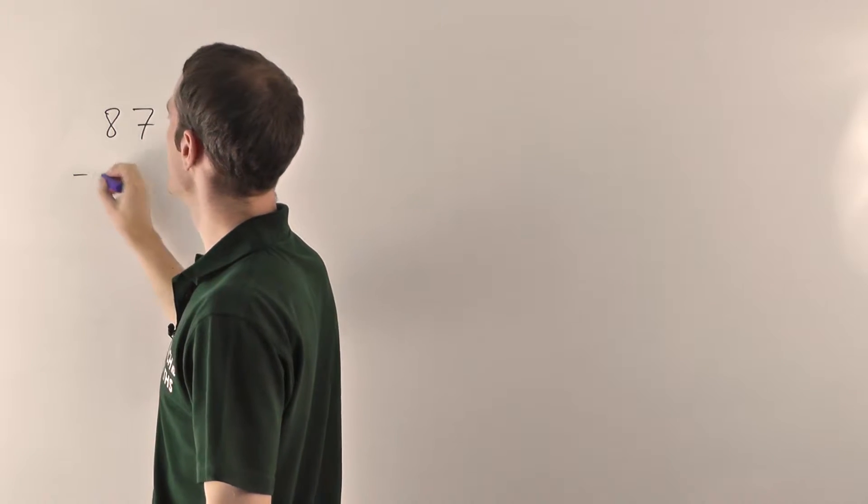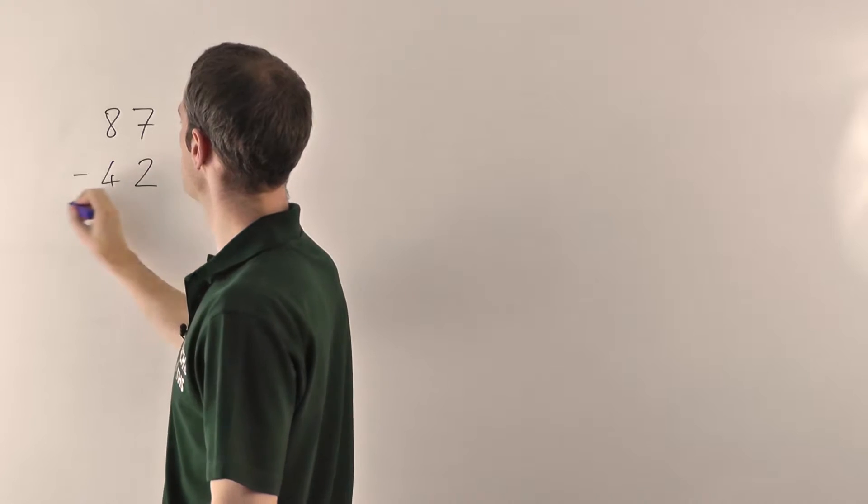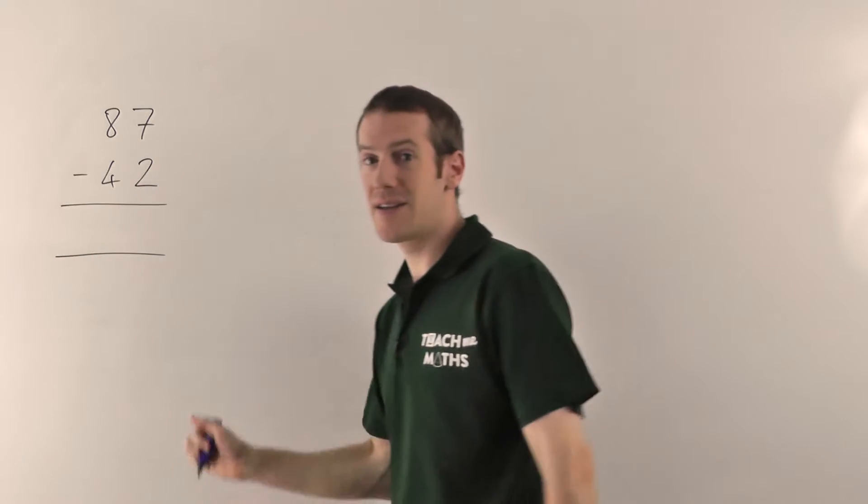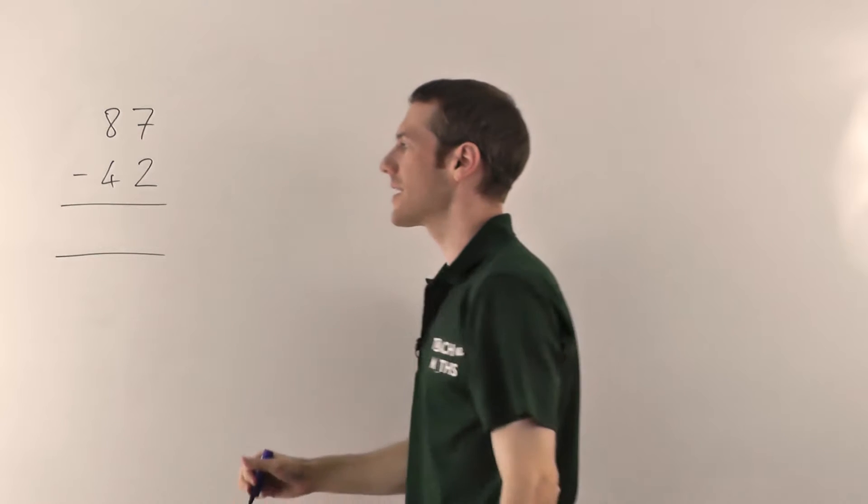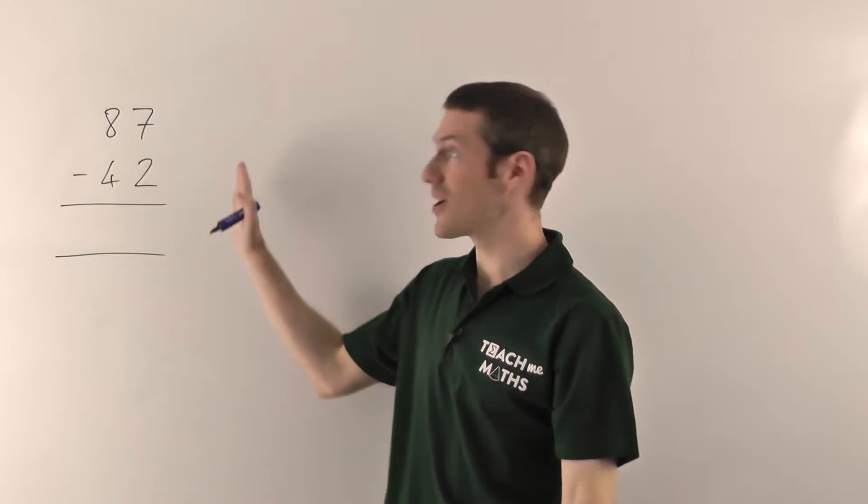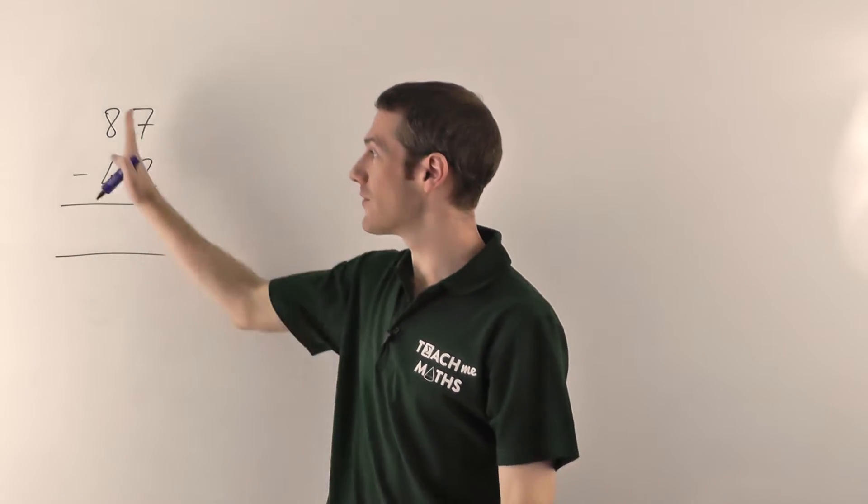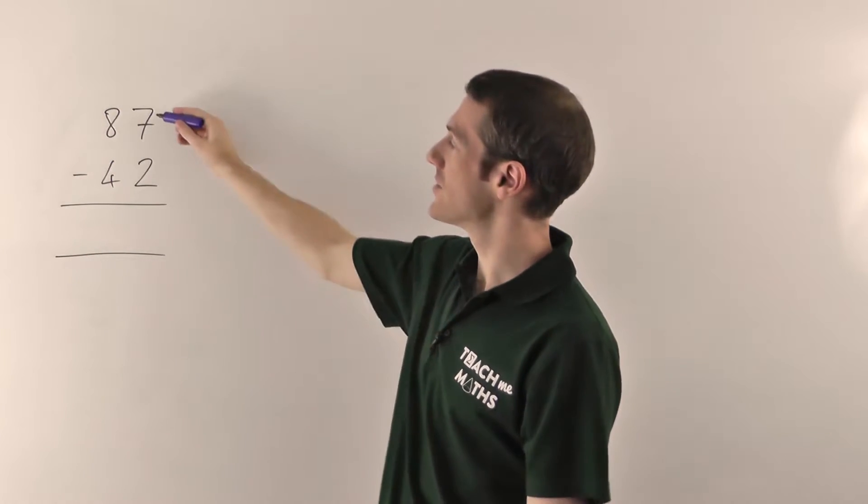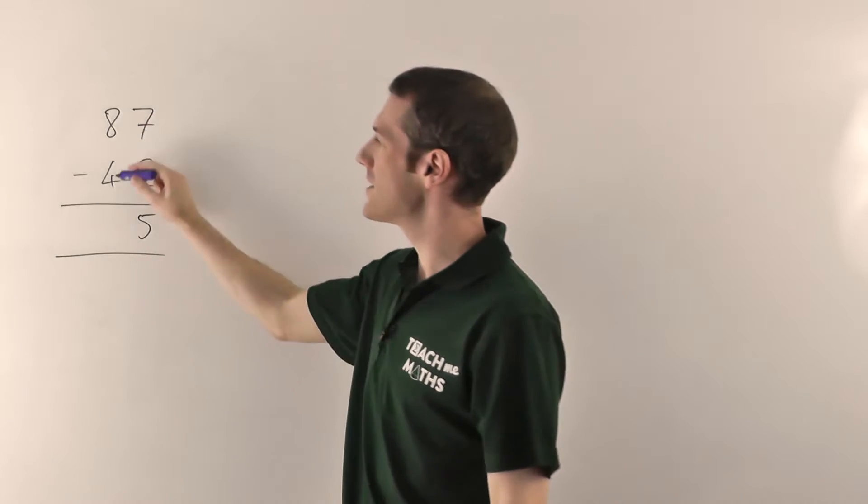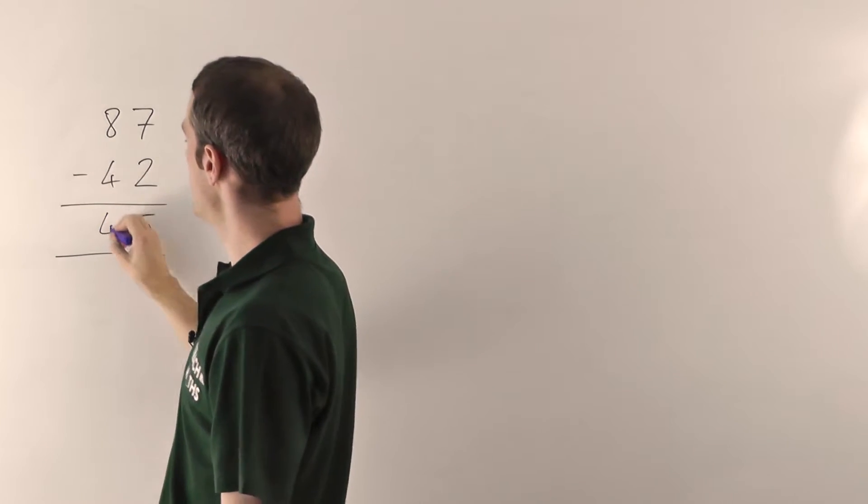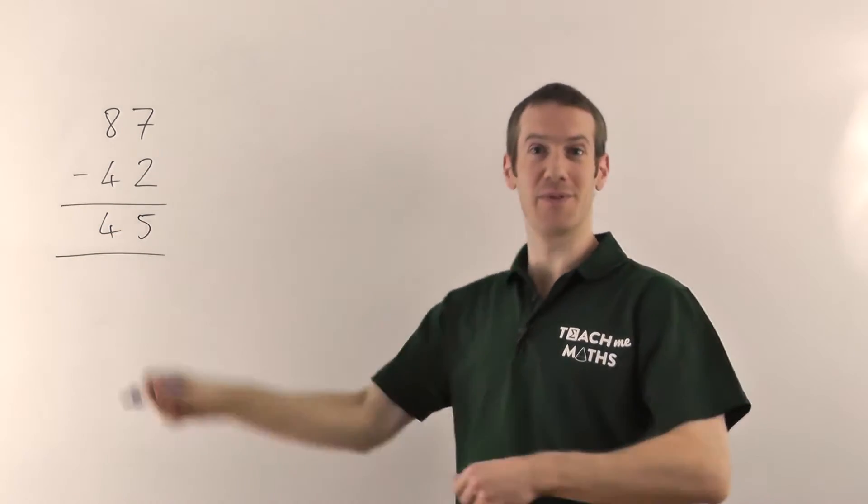Let's have 87 minus 42. So you lay it out like this, just the same as the addition except you've got a minus sign here instead of your plus sign. And again you just subtract it in columns working from the right-hand side. So 7 minus 2 gives you 5, that goes there. 8 minus 4 gives you 4, for 45. No problem at all.